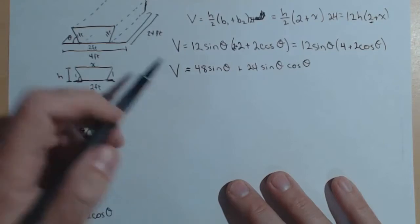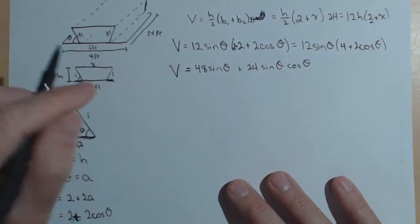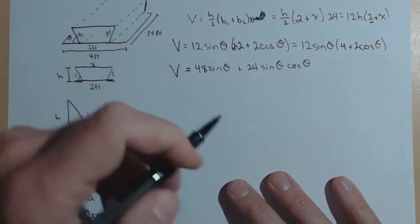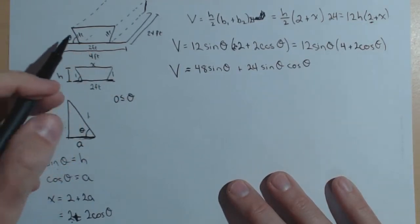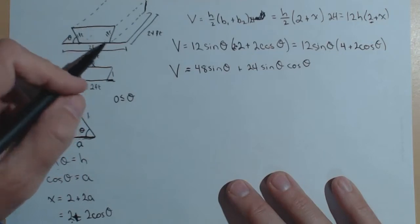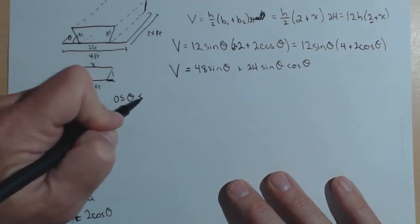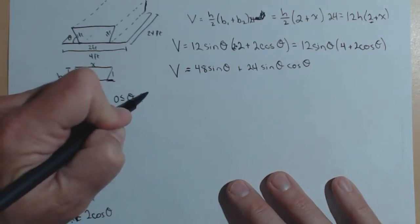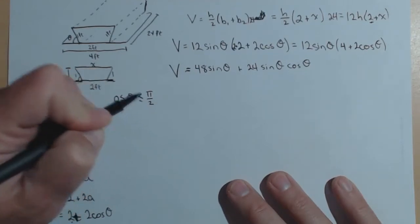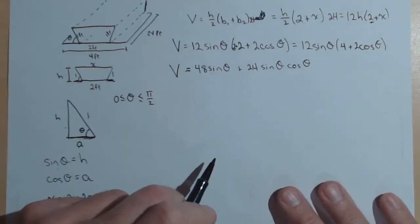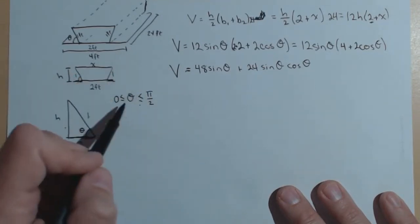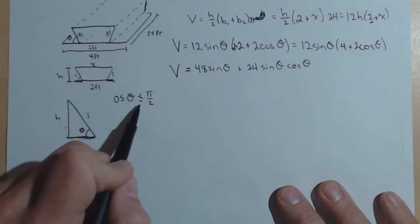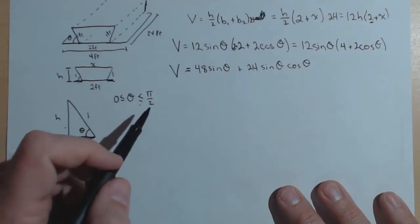This is what we want to maximize. Let's take the derivative. Now think about what theta needs to be. Clearly, theta has to be larger than 0. Also, if theta gets up to 90 degrees, we just have a rectangular box. We don't have that trapezoidal shape. So theta needs to be between 0 and pi over 2. We'll do this problem in radians. So we've now got constrained optimization on a closed bounded interval. We're guaranteed to have a maximum and a minimum.